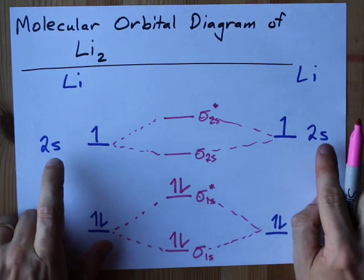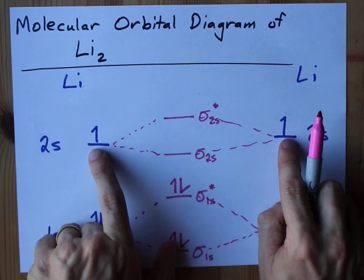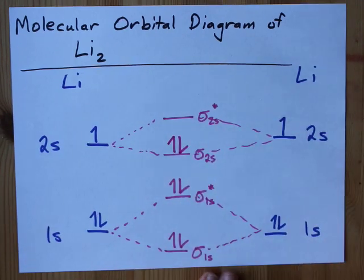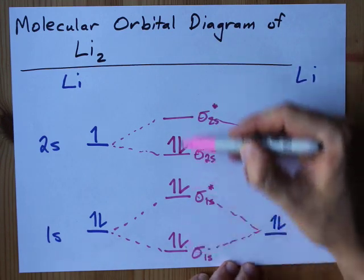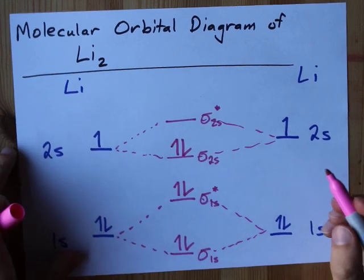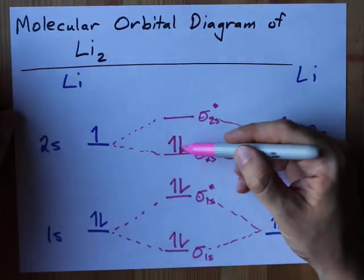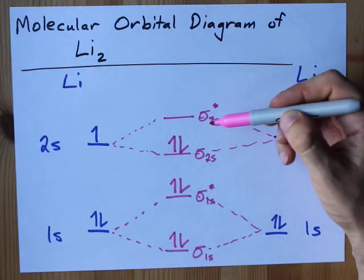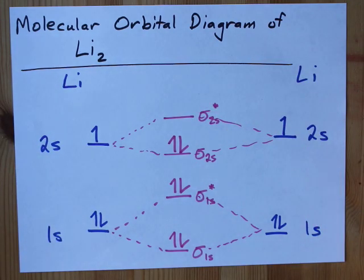But in the 2s overlaps, we only have two electrons total — that's one, two — remember the Aufbau principle: go from the bottom up. And that's it. This accounts for all six electrons. Note that we have two electrons in the bonding orbital and no electrons in the corresponding anti-bonding orbital.